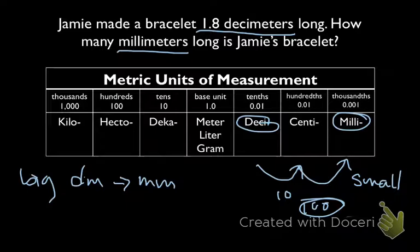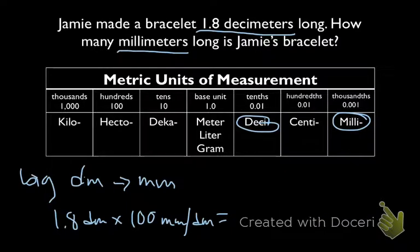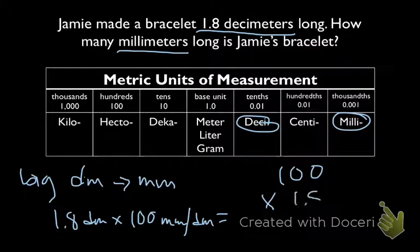So we'll take our original number, 1.8, multiply that by how many times bigger it is. It's 100 times bigger. So 100 millimeters is going to make 1 decimeter. And we're going to find our answer. Let's get a little bit more space here. Set up the standard algorithm. 100 times 1.8. And keep in mind this decimal here, we'll use that later. 8 times 0 is 0. 8 times 0 is 0. 8 times 1 is 8.